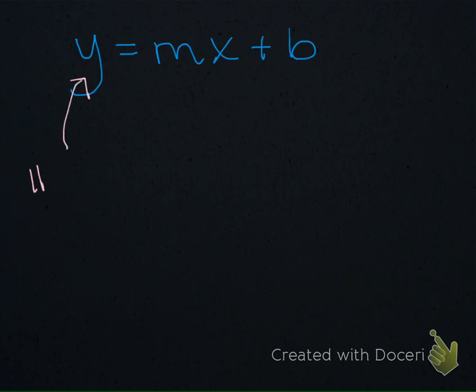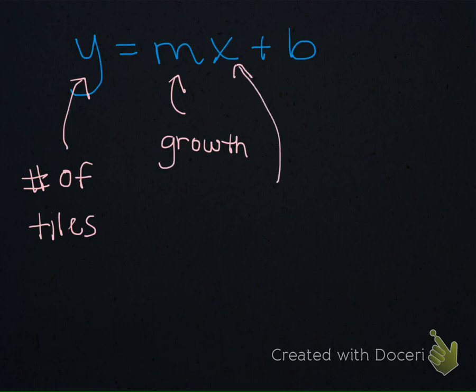y tells you the number of tiles in a figure, m is going to tell you how much the pattern is growing by from figure to figure, x represents the figure number, and then finally b represents how many tiles we begin with or how many tiles are in figure 0.